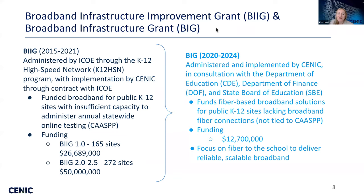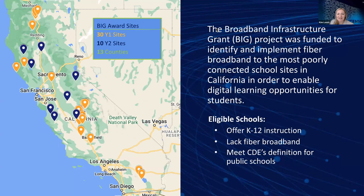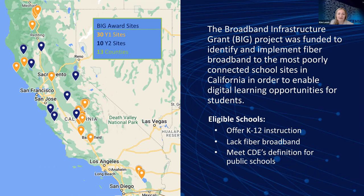To date, we have awarded 30 sites during year one of the BIG program, and I'm pleased to report we've already had three year one sites complete the connection process and are utilizing their connection. As part of year two, which is why we are all here today, we have 10 sites that will be proceeding this year. In total, 13 counties are participating in this program that we are working to bring robust fiber broadband to in order to enable digital learning opportunities.